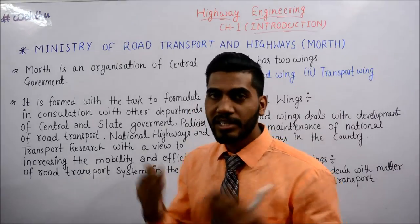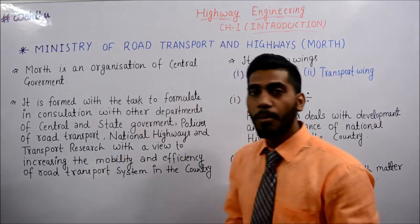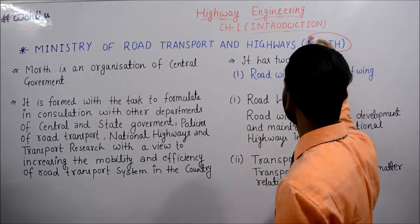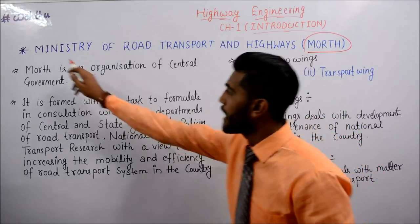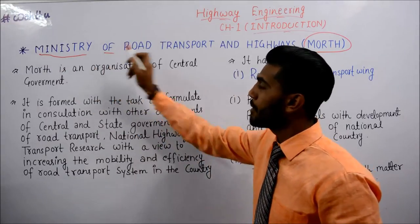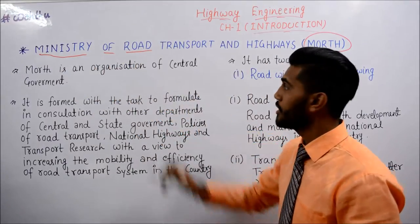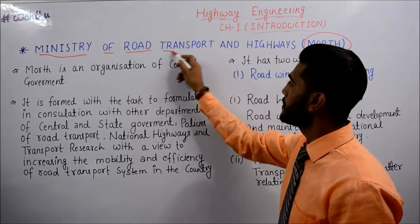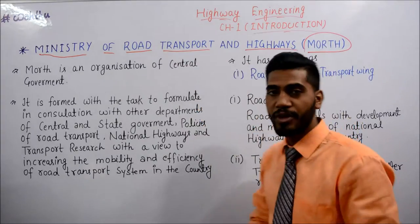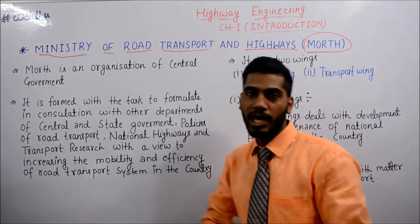जैसा कि आप वाइट बोर्ड पर देख सकते हैं, MORTH की full form है: M means Ministry, O means of, R means Road, T means Transport, H means Highway. तो आज हम जानेंगे कि MORTH है क्या.